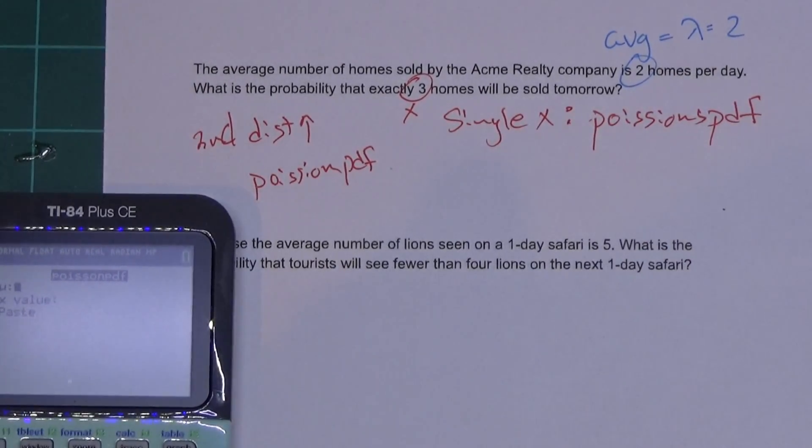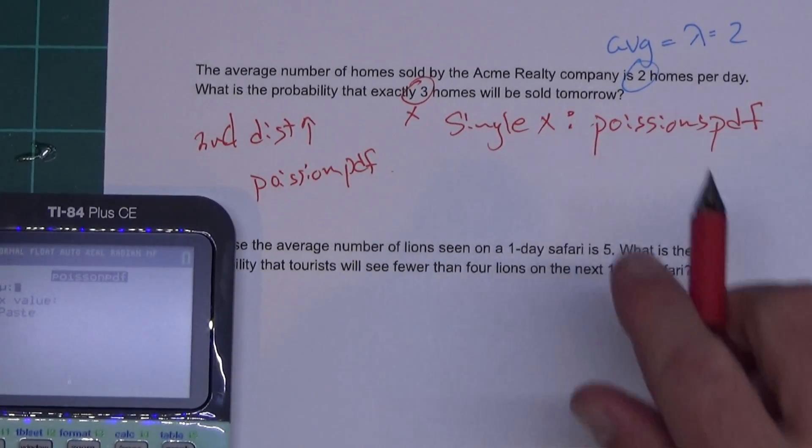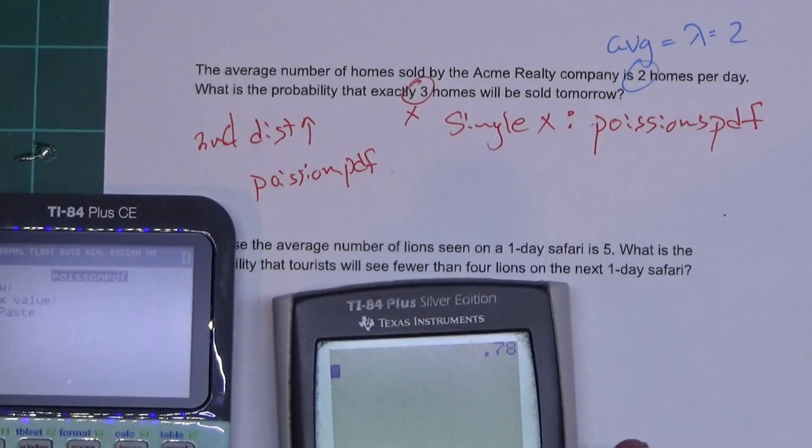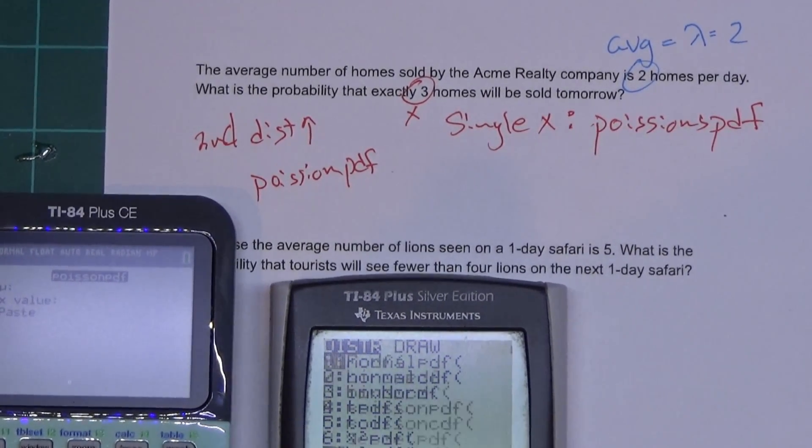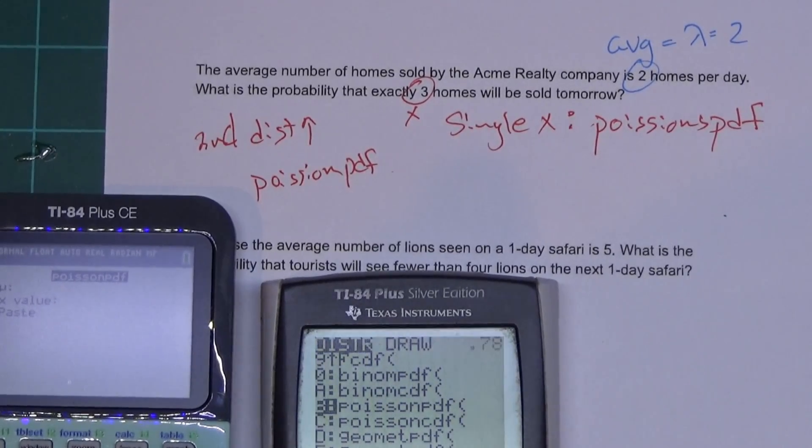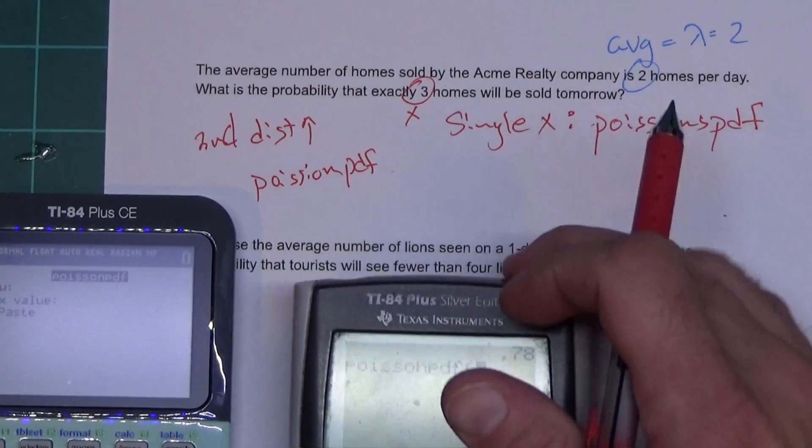But yours might have a mu there. This one here, when you do it, you hit second distribution and scroll up to Poisson's. It's not gonna look like that - that's all it does. It sticks out on the screen, so we'll come back to this one in a minute.